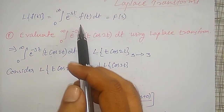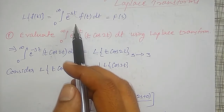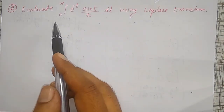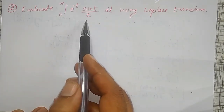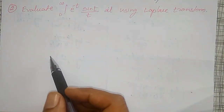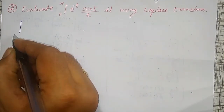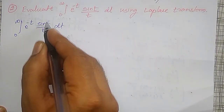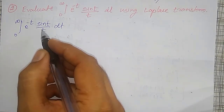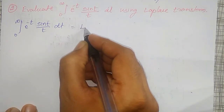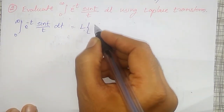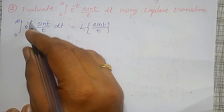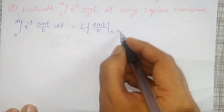The important thing is to remember the definition of Laplace transform in reverse. Next problem: evaluate the integration from 0 to infinity of e^(-t) · sin(t)/t dt using Laplace transforms. Comparing with the Laplace transform definition, f(t) = sin(t)/t, and comparing e^(-t) with e^(-st), s is equal to 1 here. So s is replaced by 1.